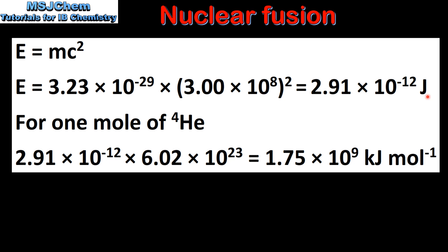This is the energy released in the fusion of one helium nucleus. To calculate the energy released for one mole of helium nuclei we multiply the value for one nucleus by the Avogadro constant to give us 1.75 times 10 to the 9 kilojoules per mole.